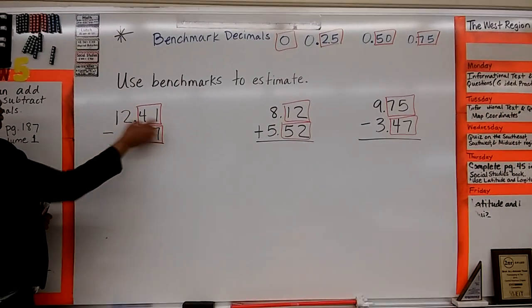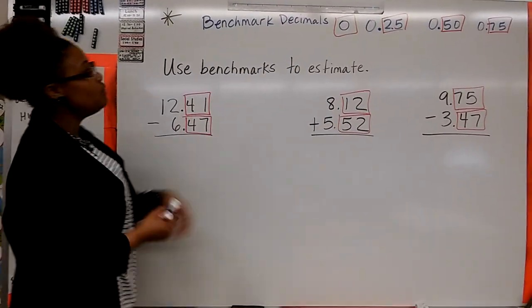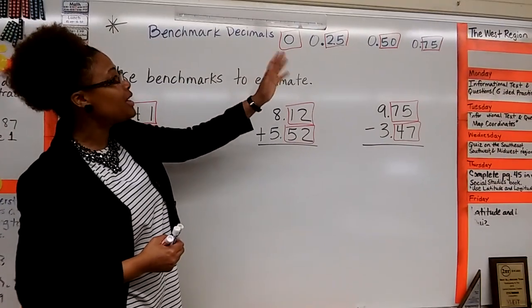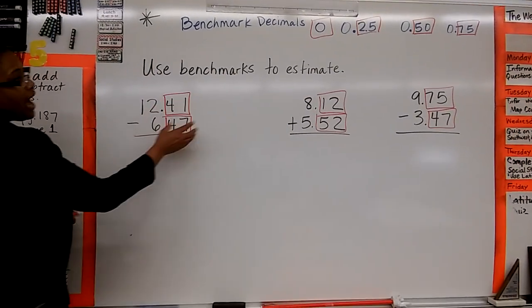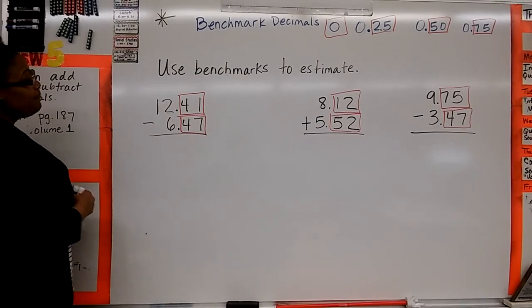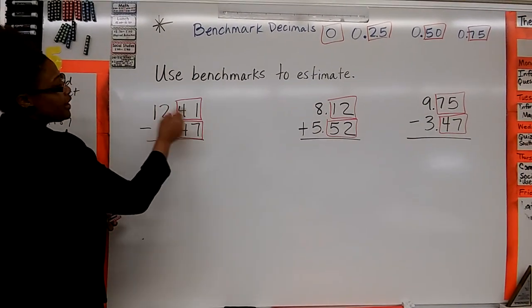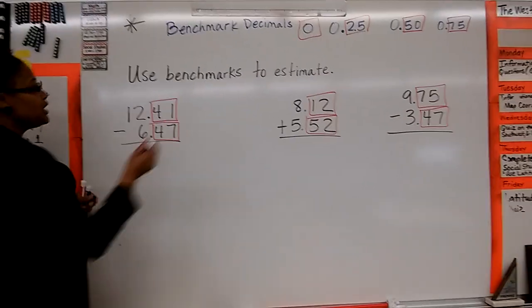Here, we have 12 and 41 hundredths minus 6 and 47 hundredths. And if you notice that our benchmark decimals are to the hundredths place, so that's why in each problem, I have only focused on the hundredths. Now, class, which benchmark is close to 41 hundredths? 50 hundredths.